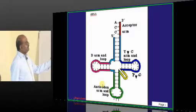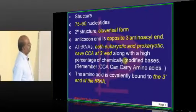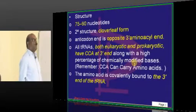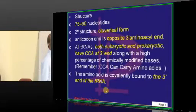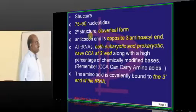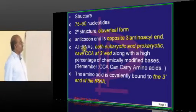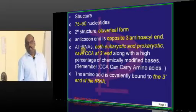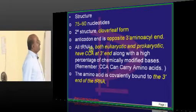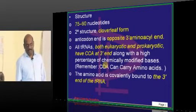tRNA has one D arm and one TΨC arm. In its secondary structure, it is a cloverleaf form, where the anticodon end is opposite to the 3' amino acid accepting end.